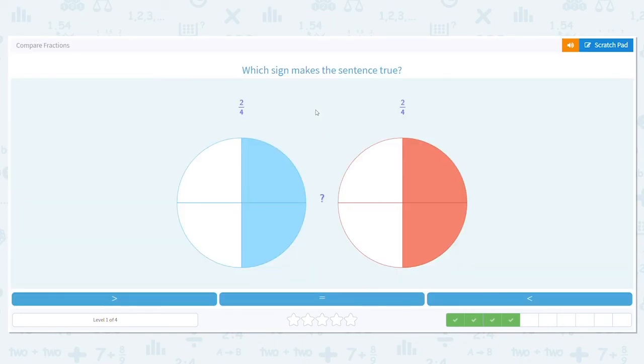Which sign makes this sentence true? Two-fourths and two-fourths. They're the same, right? So they're equal. Good job.